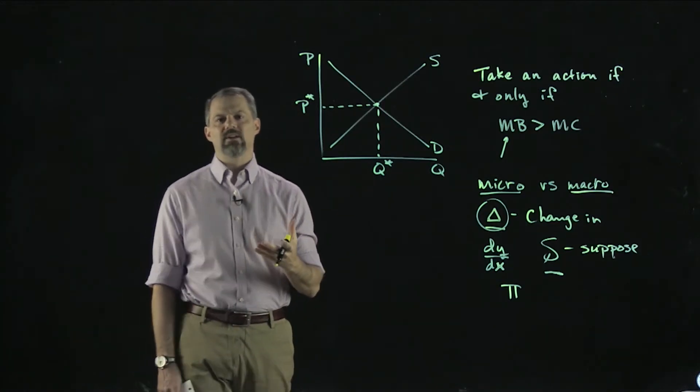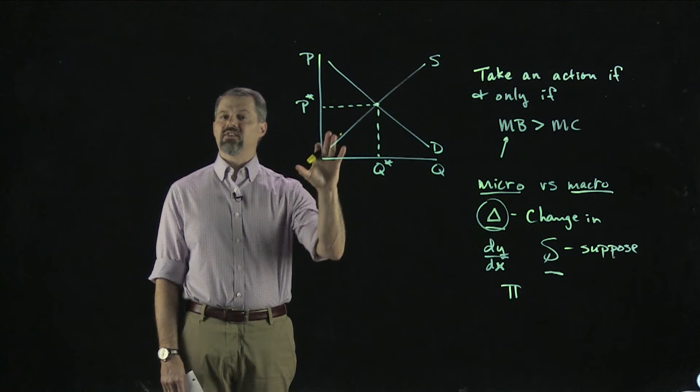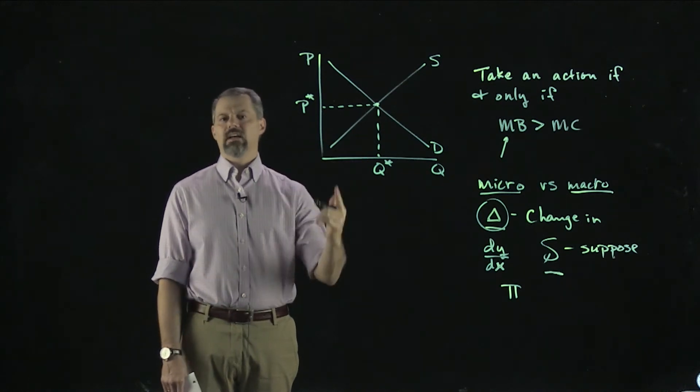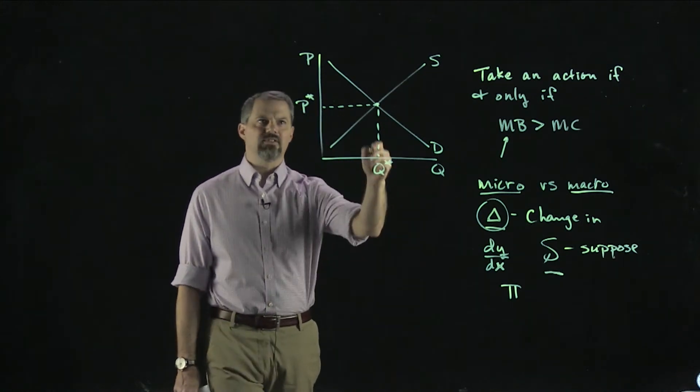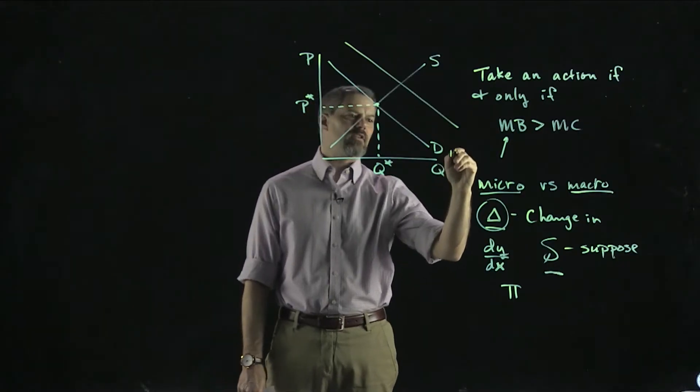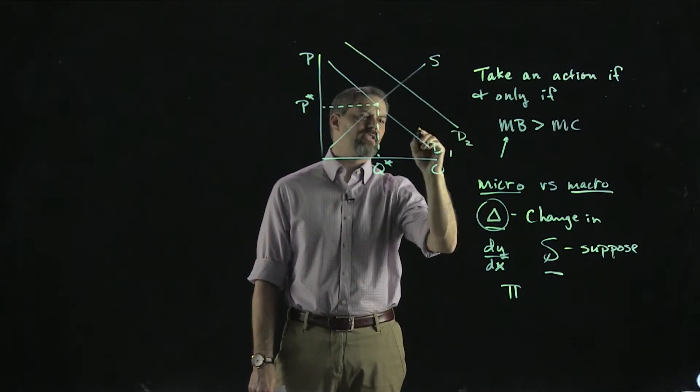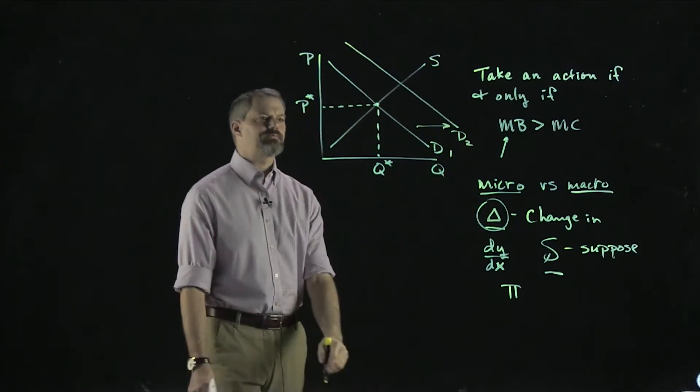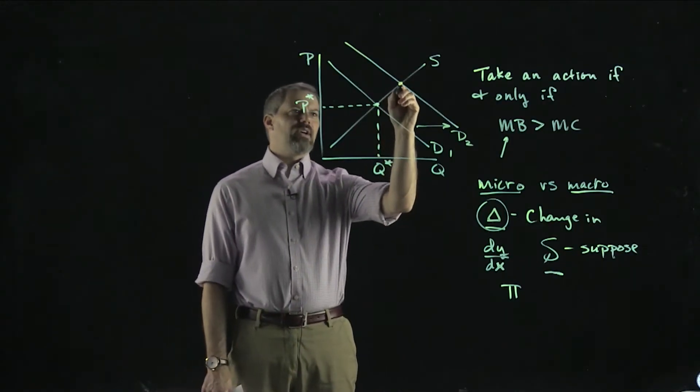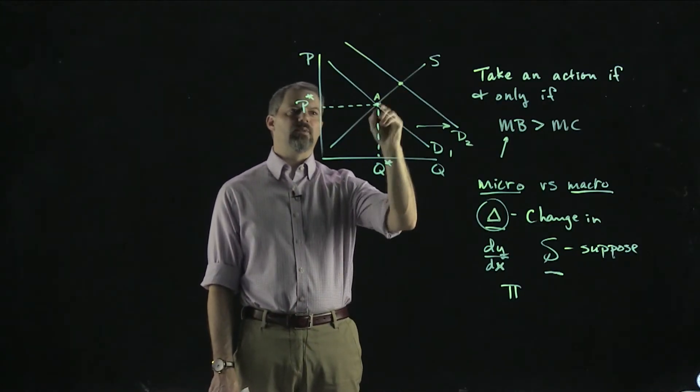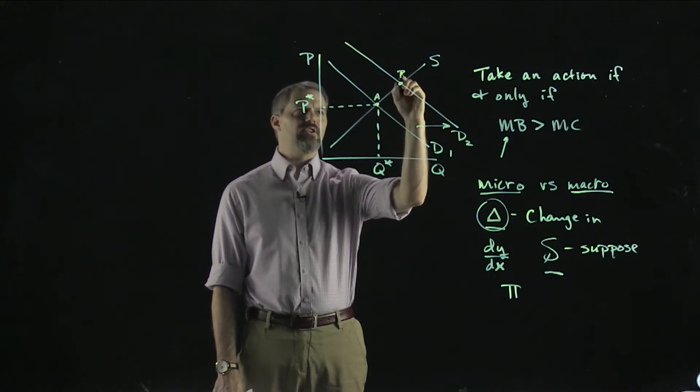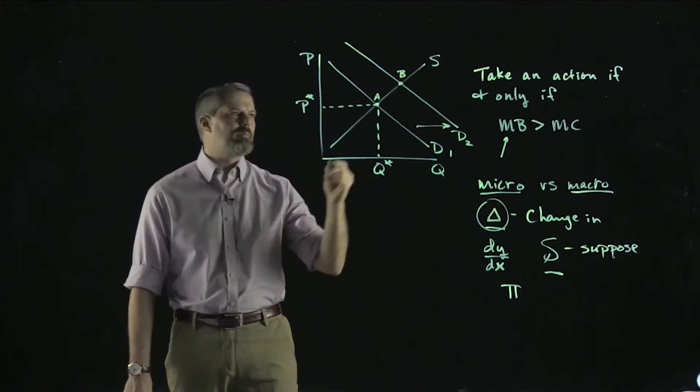Then you would have worked through some problems. We might say, let's suppose this is demand for the market for a normal good and consumer incomes go up. Well, consumer incomes are a determinant of demand. Since this is a normal good, if incomes go up, demand increases. So we draw a new demand curve. We could say demand increases from D1 to D2.